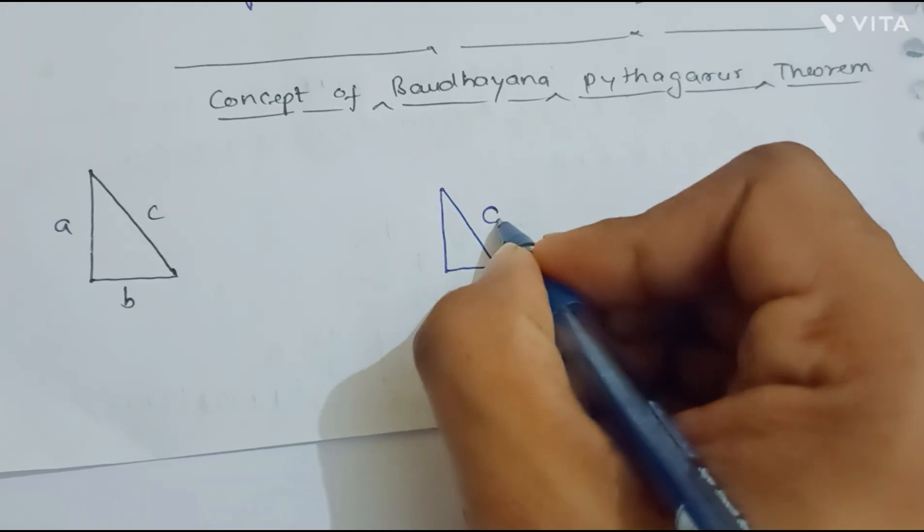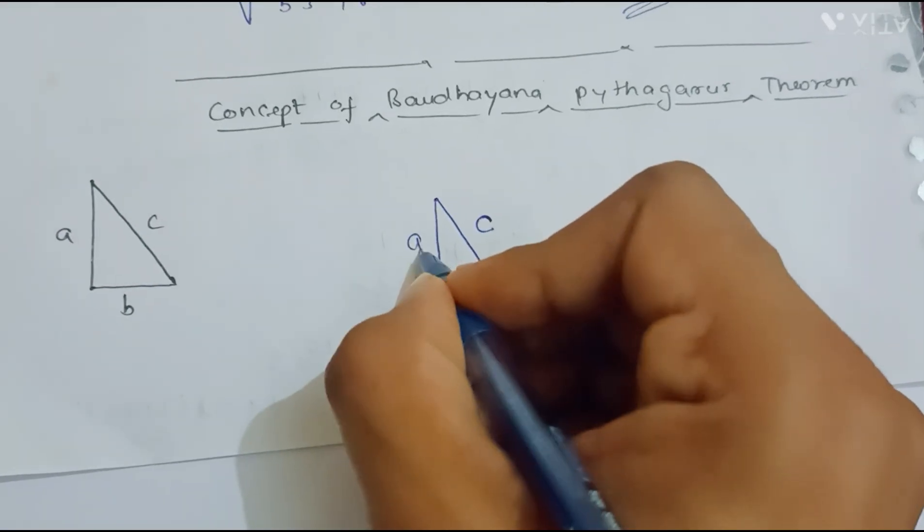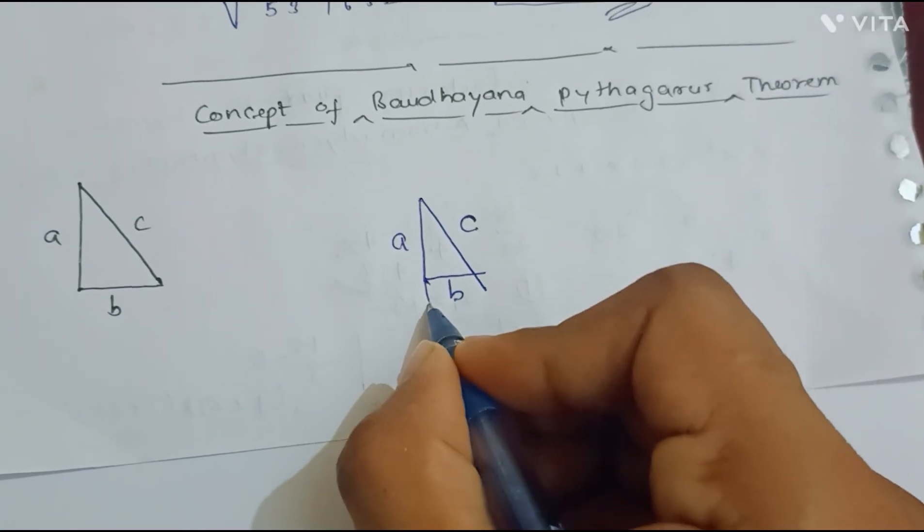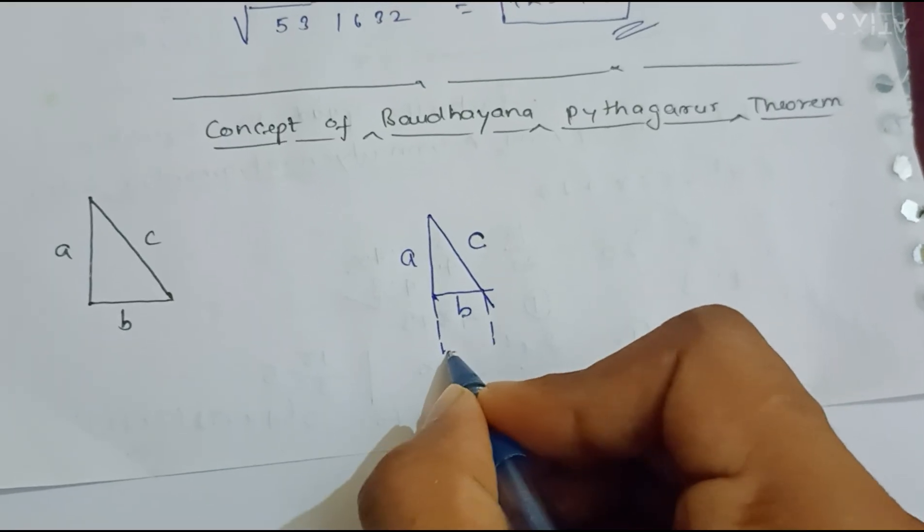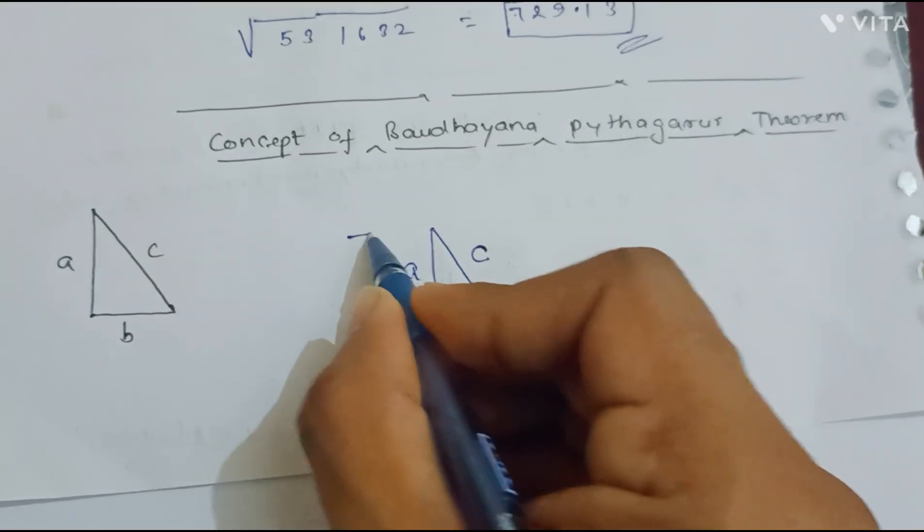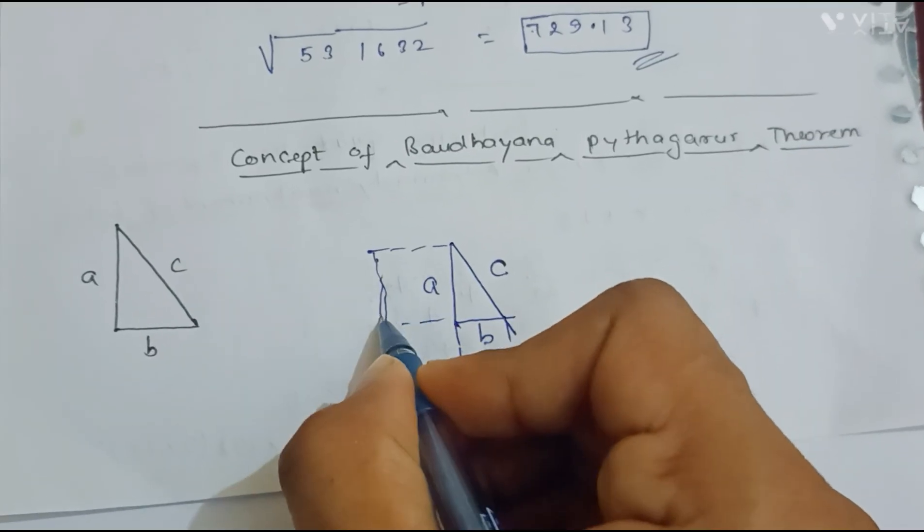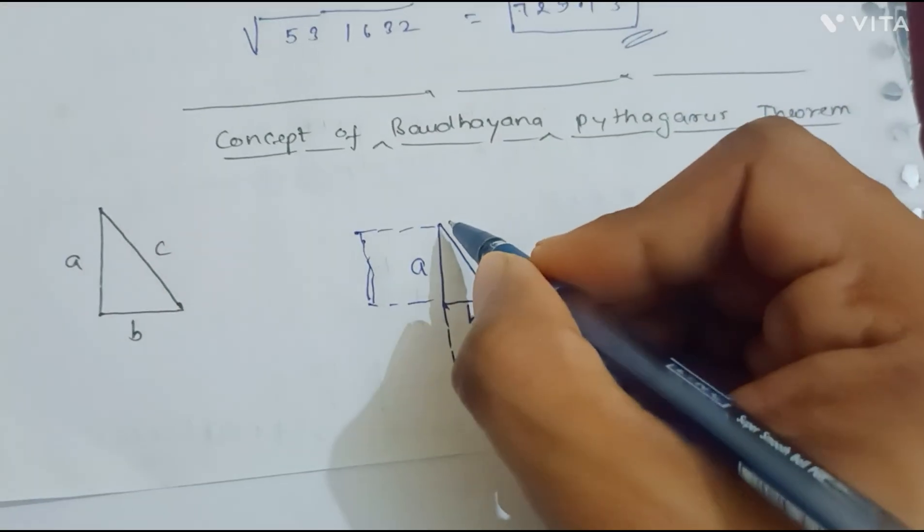If this is c, if this is b, and this is a, then if we will make a square from this side and if we will make a square from this side, then we will get... and if we will make a square from this side, that is hypotenuse of it.